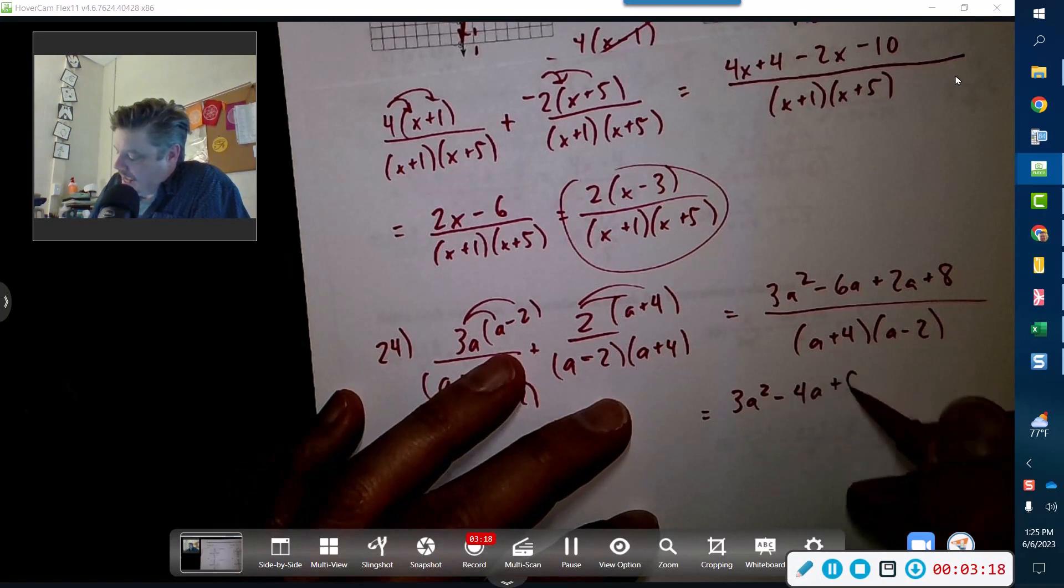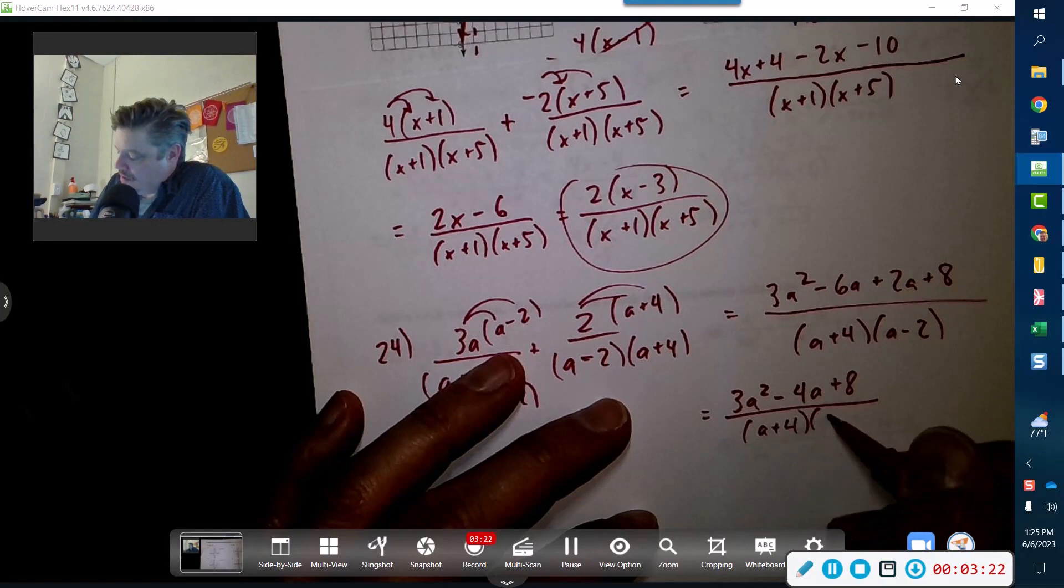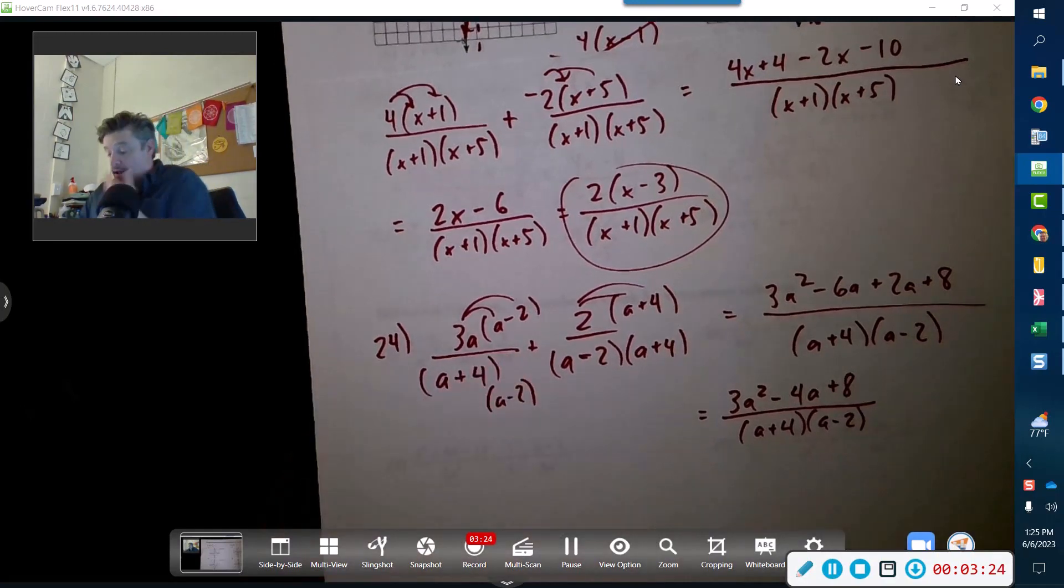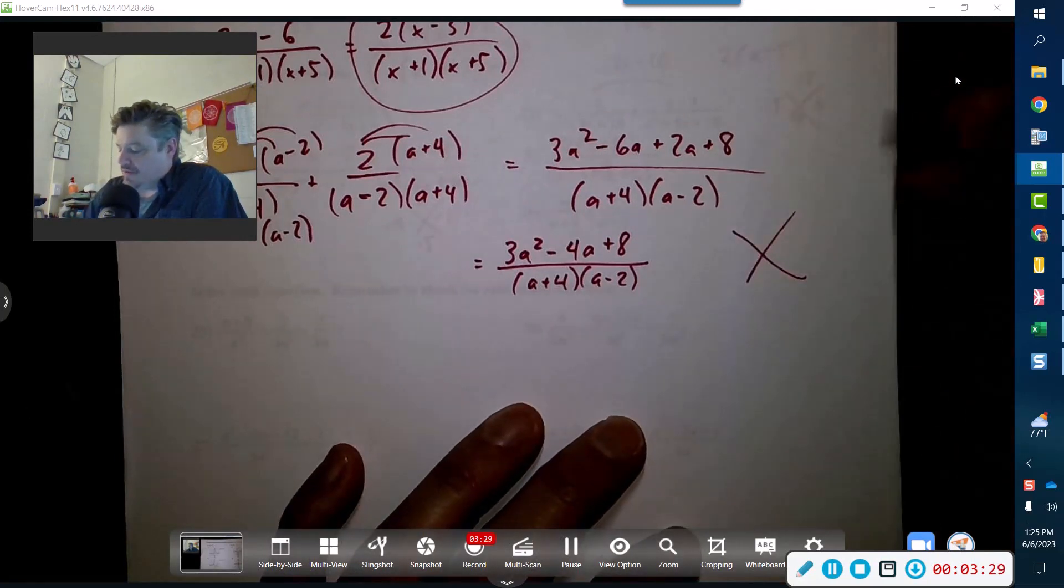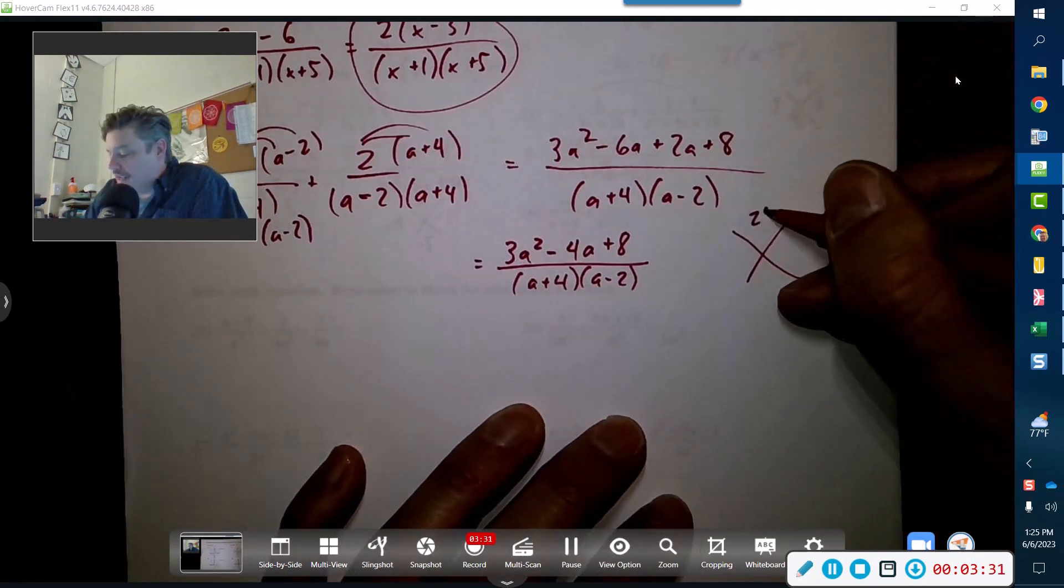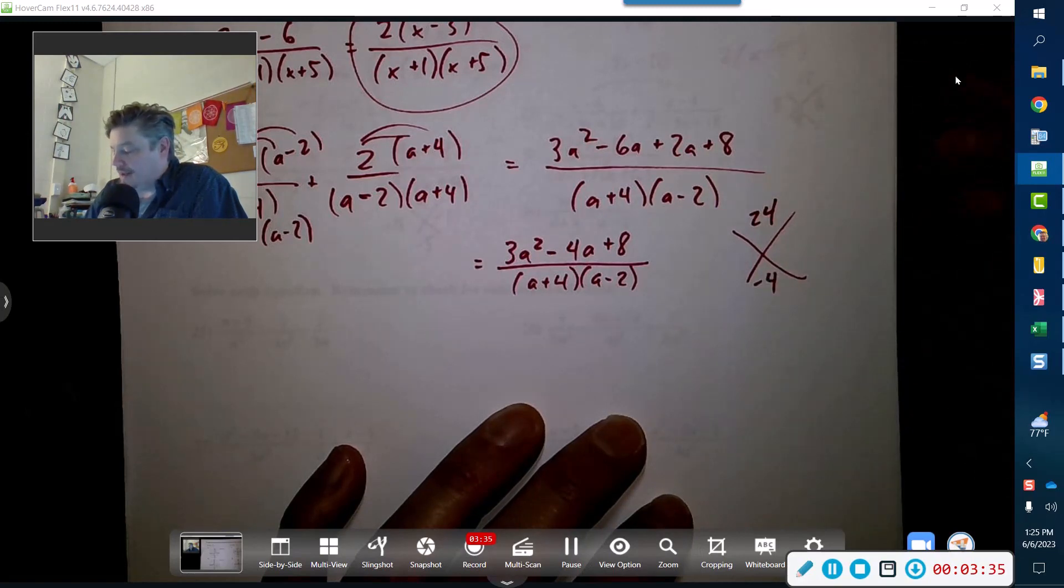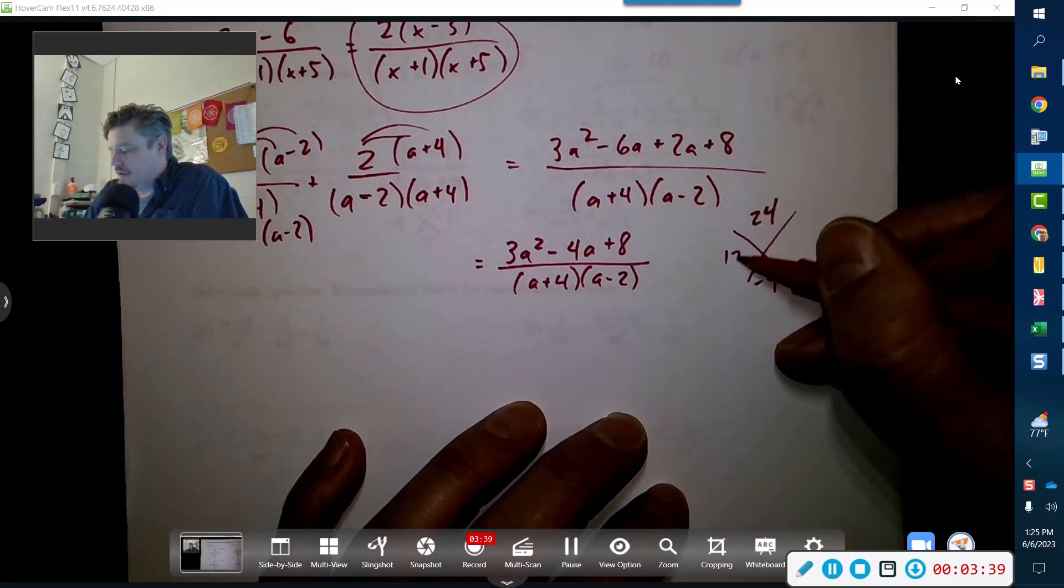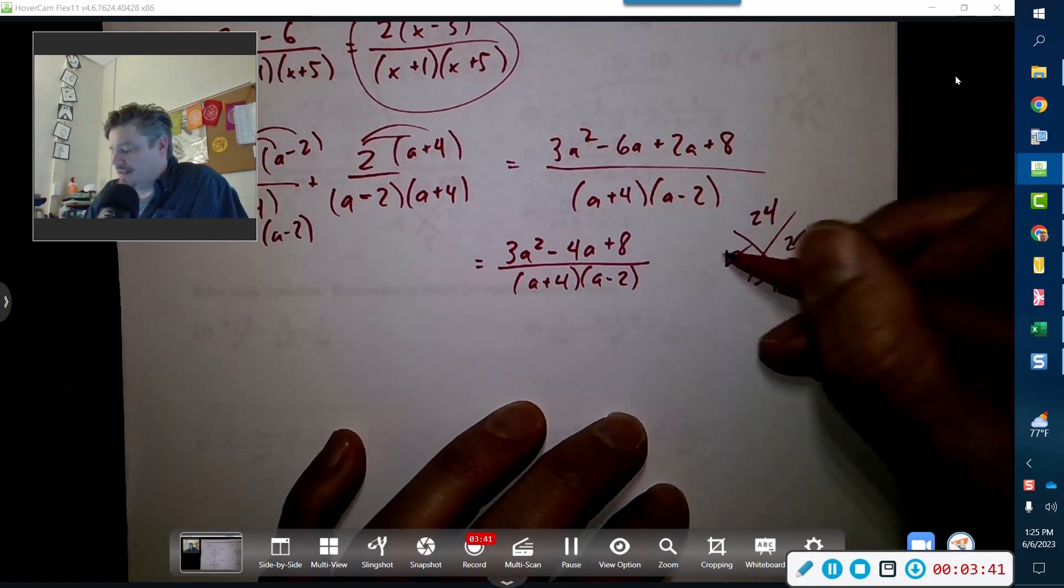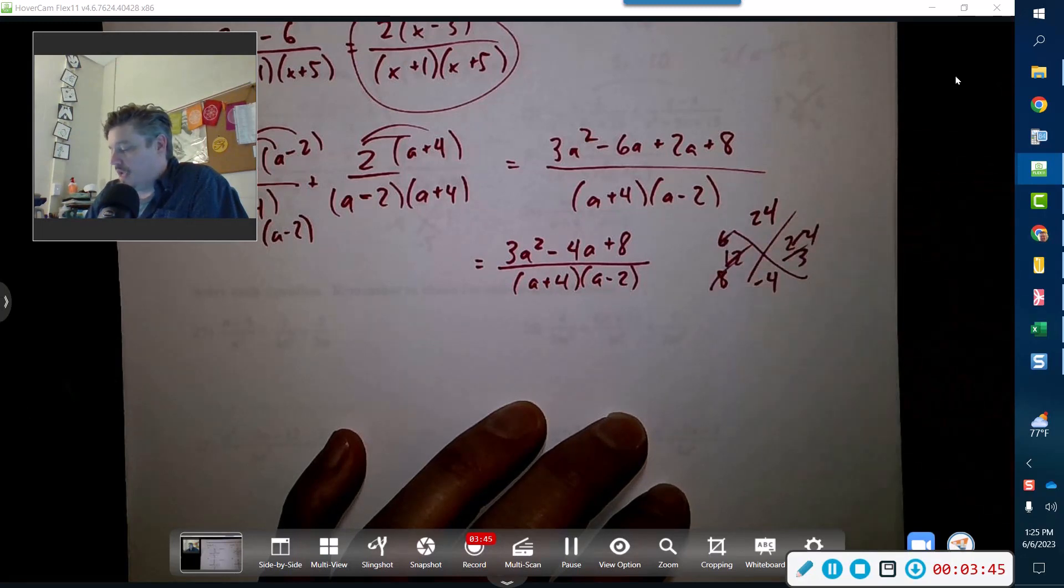The only thing that we've got to do is possibly we might have factors of 24 that add up to negative 4. Highly unlikely but it is possible. Let's think: we got 12 and 2, that won't work. 6 and 4 won't work. 8 and 3 won't work, and that does it. That's it, we're all done.